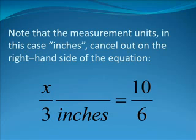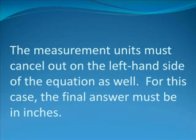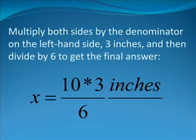Note that the measurement units, in this case inches, cancel out on the right-hand side of the equation. Then we have X divided by 3 inches is equal to 10 over 6. The measurement units must cancel out on the left-hand side of the equation as well. For this case, the final answer must be in inches.